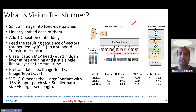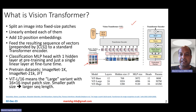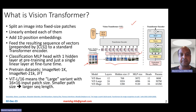The idea is that for any vision classification task — for example, image classification — you take the image and split it into fixed-size patches. You take the full image and split it into, let's say, a three-by-three grid, so nine different patches. Then once you have these small patches, you essentially have an MLP layer, a dense layer, to linearly embed them into embeddings, which can be called visual embeddings.